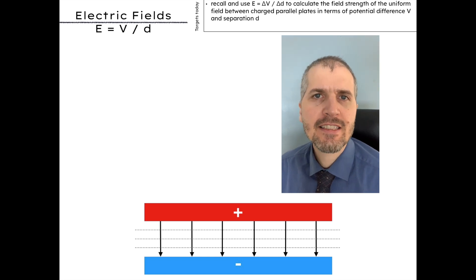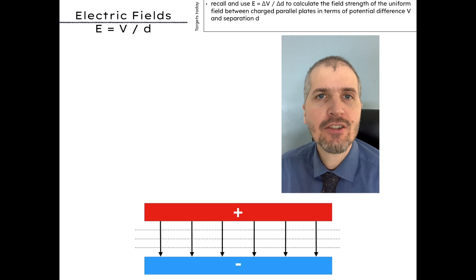The electric field strength is defined as the force per unit positive charge acting on a stationary point charge, E equals F over Q. In this lesson video, I'm going to go through a couple of ways to prove that E equals V over D as well.